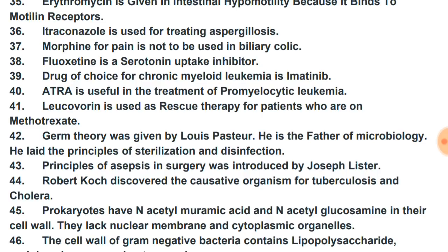Fluoxetine is a serotonin uptake inhibitor. The drug of choice for chronic myeloid leukemia (CML) is imatinib. All-trans retinoic acid (ATRA) is useful in the treatment of promyelocytic leukemia. Leucovorin is used as a rescue therapy for patients who are on methotrexate.